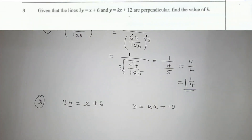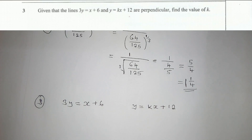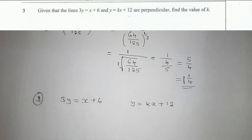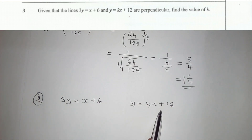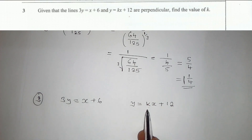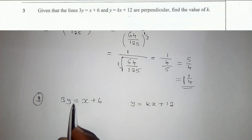For Question 3, given that the line 3y equals x plus 6, and y equals kx plus 12 are perpendicular, find the value of k. When you hear perpendicular or parallel, the first thing you need to think of is the gradient. We check these two equations. We pick the first one because the second one contains k, which is what we want. So we use the gradient of the first equation.